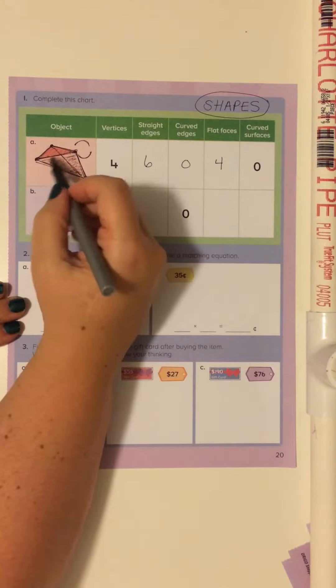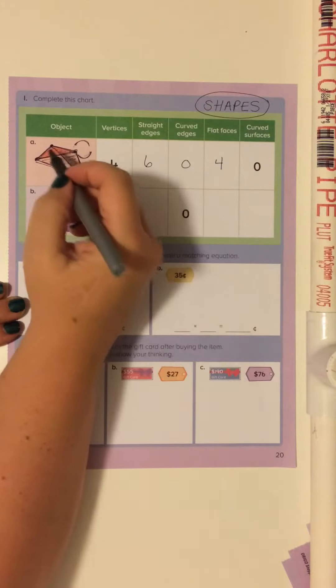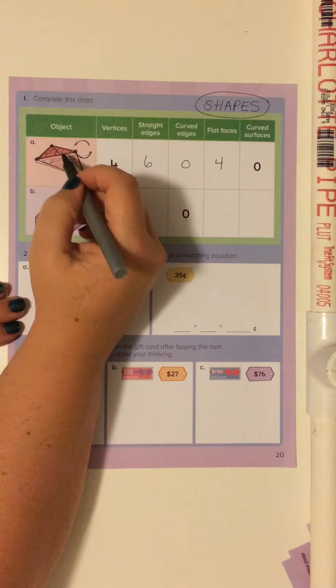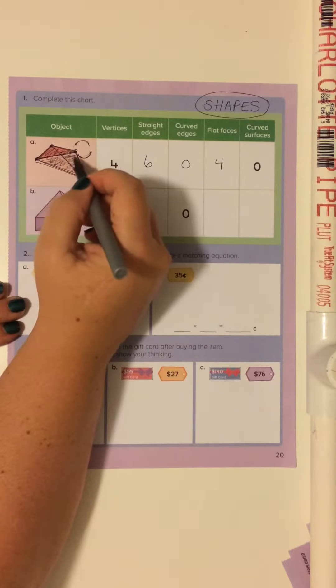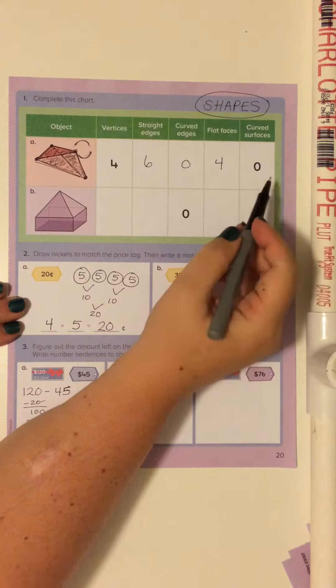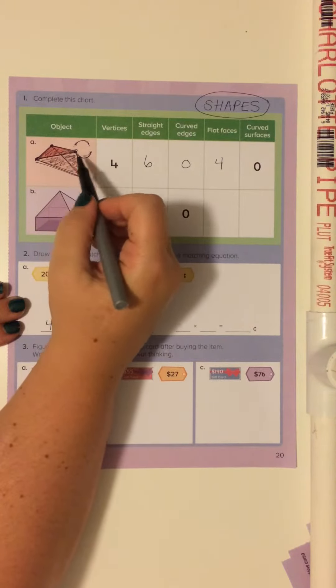There are no curved edges to this shape, so I put zero. Flat faces are then the panels between all of the edges, so there's the one on top here, the one in front here, and the two that are behind. So there are four total.